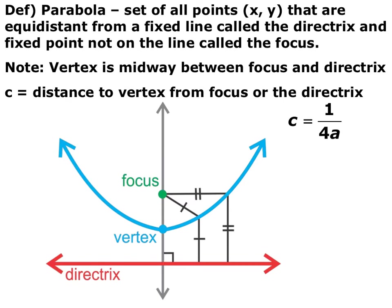The vertex is always halfway between the directrix and the focus. The focus is always inside the parabola. The parabola never crosses over the directrix. We call the distance from the focus to the vertex — which is the same as the distance from the vertex to the directrix — c. We can calculate c by 1 over 4a, where a is the leading coefficient of your equation.